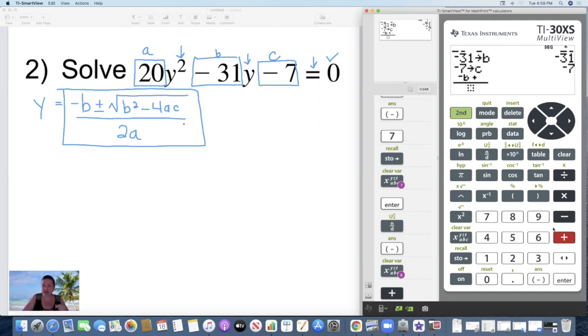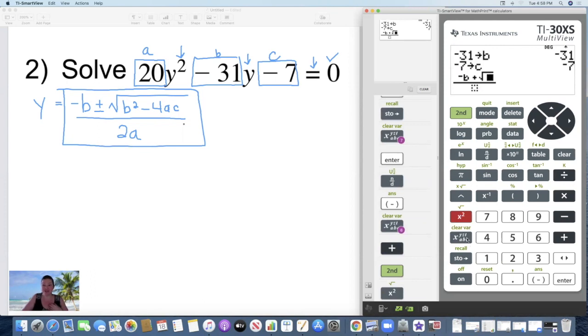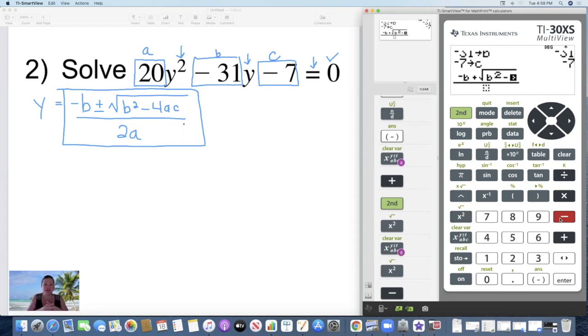So negative b plus. And now I need a square root. Square root's in green, halfway down on the left here. So anytime you want something in green, you have to hit the green second button. So hit second. And then I can hit that x squared key to get my square root. Now again, I need b. So I'm going to put in b. And I need to square it. So right above b is the x squared key. Minus. This one I have to hit minus because it's between two numbers. It's not out front. And then four.